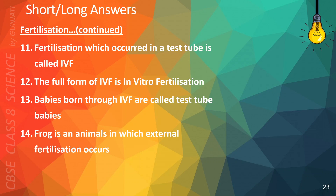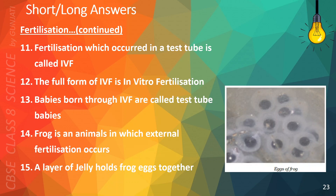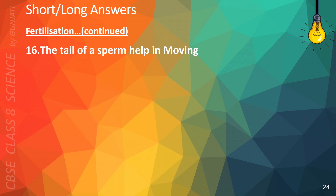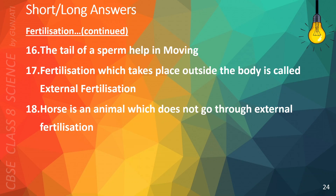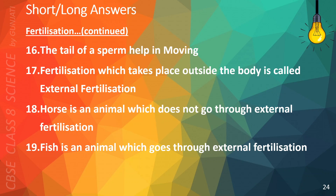Frog is an animal in which external fertilization occurs. A layer of jelly holds frog eggs together. This is a picture of the eggs of frog. The tail of a sperm helps in moving. Fertilization which takes place outside the body is called external fertilization. Horse is an animal which does not go through external fertilization. Fish is an animal which goes through external fertilization.